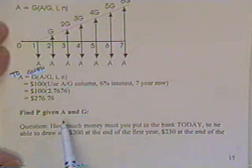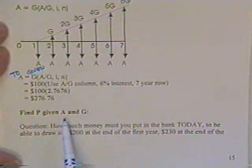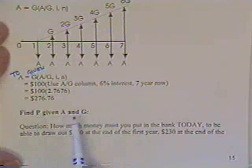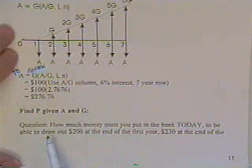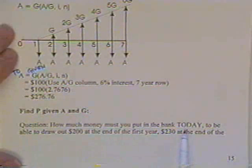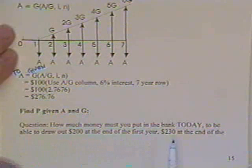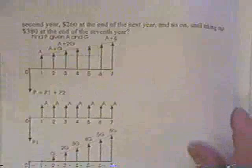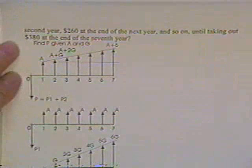Find the present value. This is a different one here, given A and G. The reference manual doesn't give you any A and G. He expects you to be able to take A and get its present, and then find G and get its present value. How much money would you have to put in the bank today, right now, instantly, to be able to draw out $200 at the end of the first year, $230 at the end of the second year, and $260 at the end of the next year, and so on.